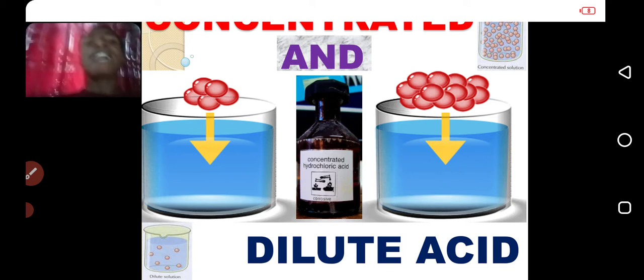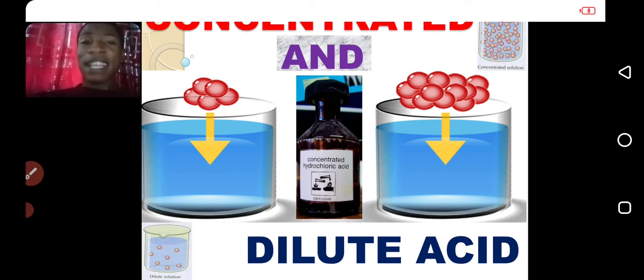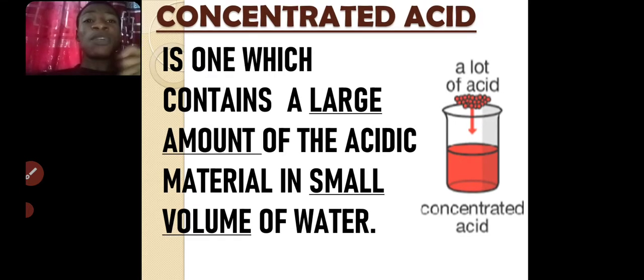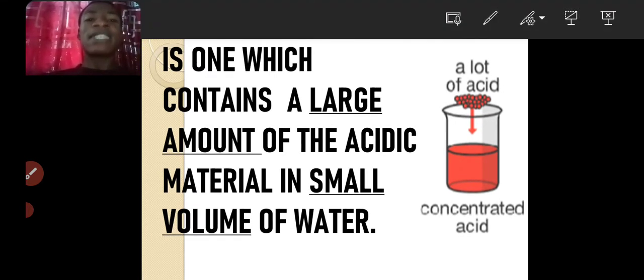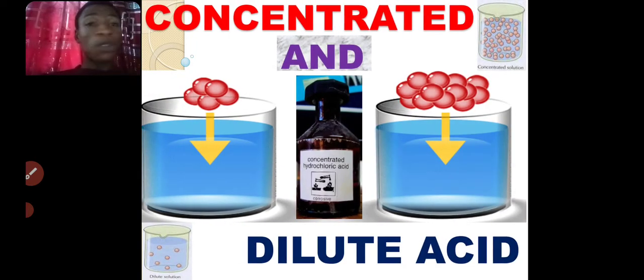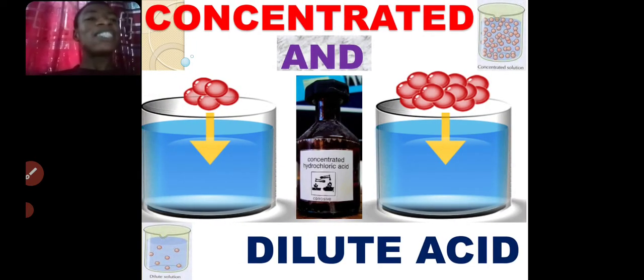We have discussed types of acid based on their degree of ionization when dissolved in water, where we talked about the strong acids and the weak acids. Today we are talking about types of acid based on the amount of water present in the solution of those acids. Here I present to you concentrated acid and dilute acid.